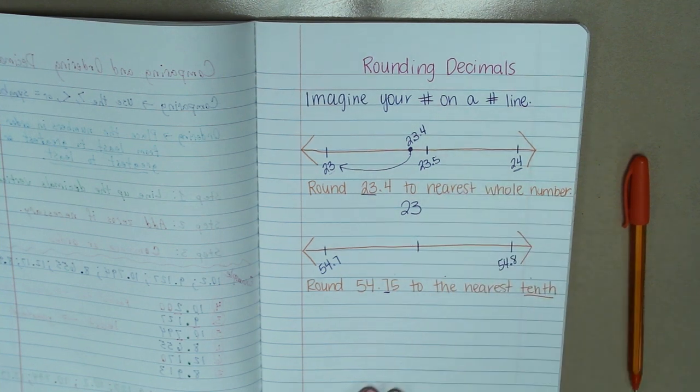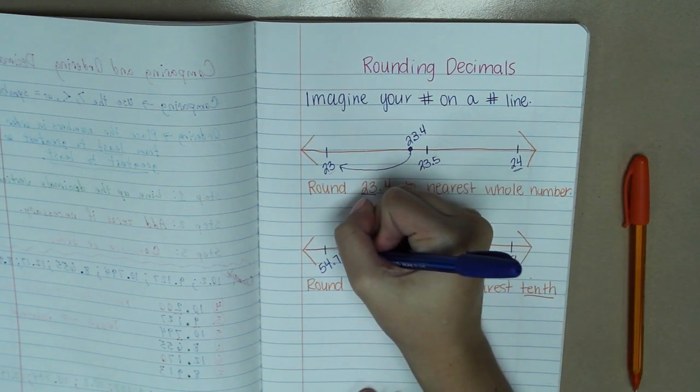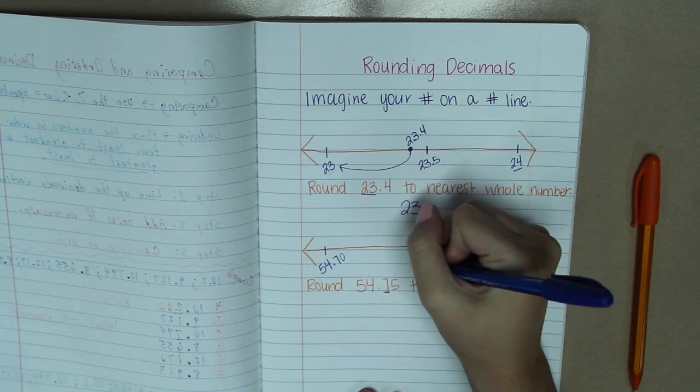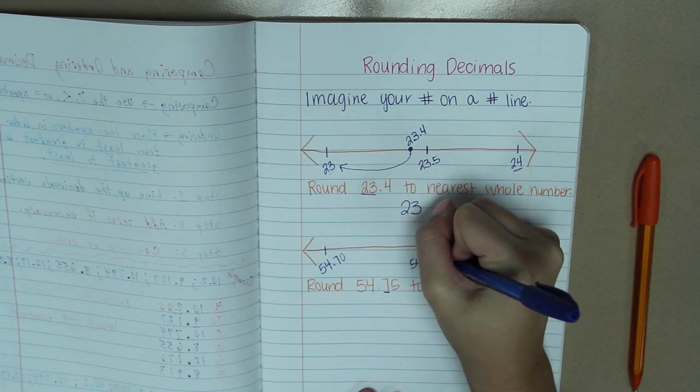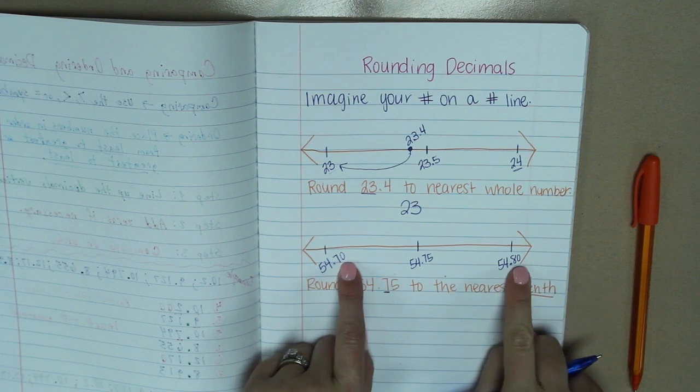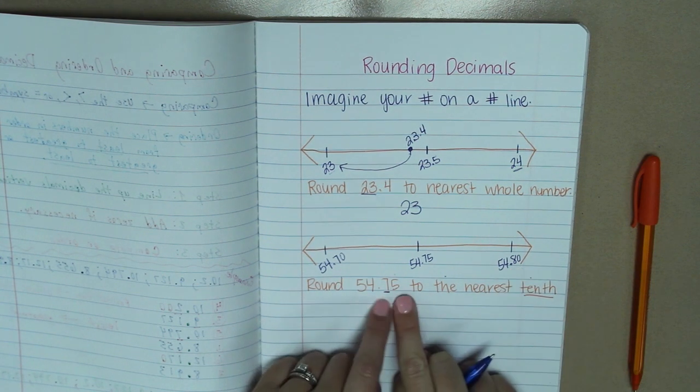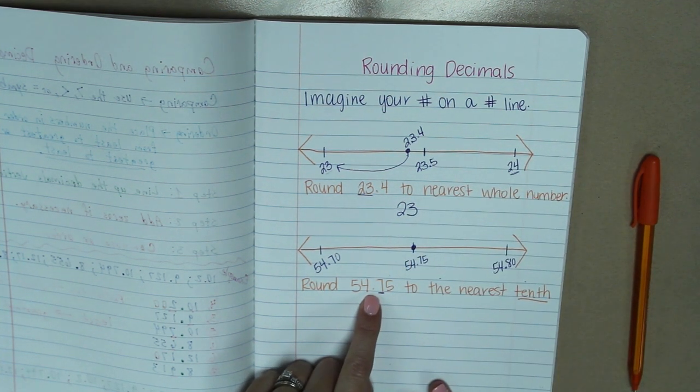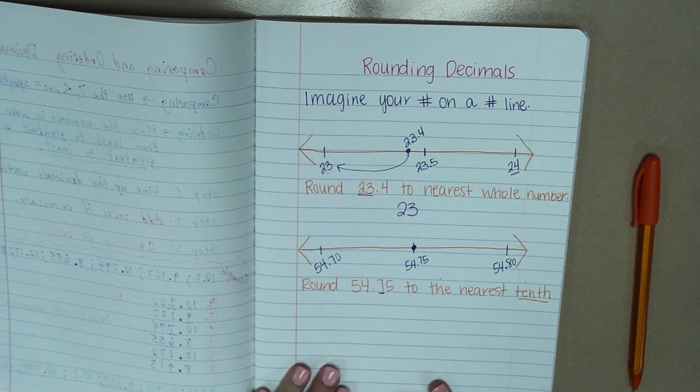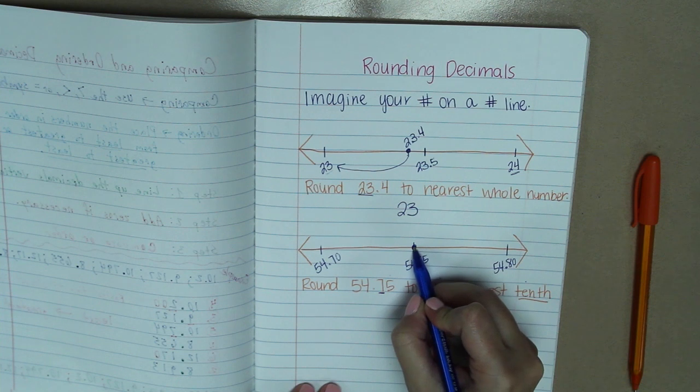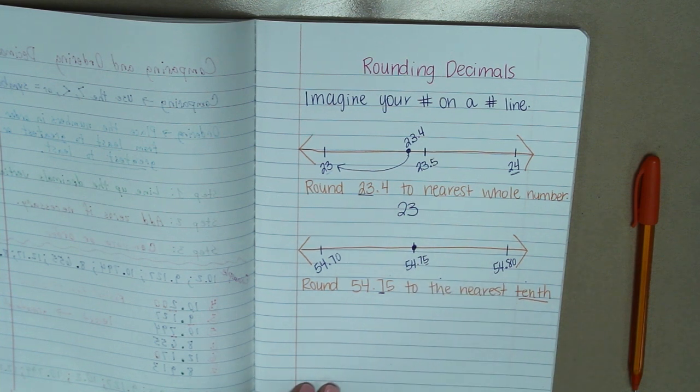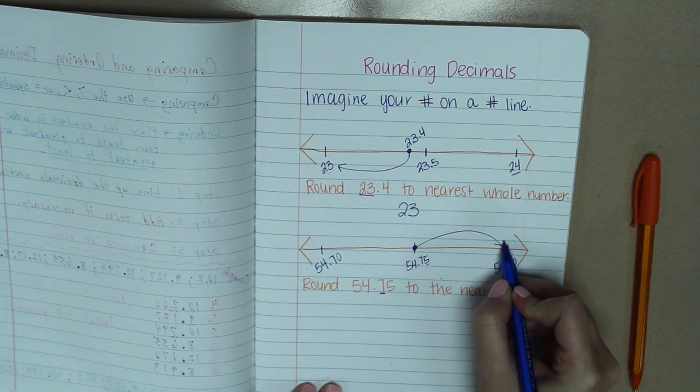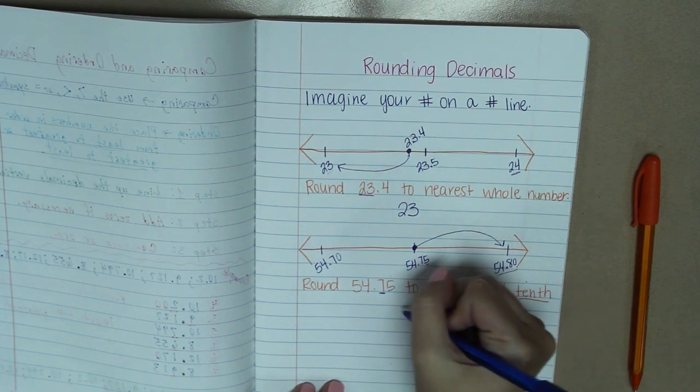Well, right in the middle, if we imagine this as 70 hundredths and 80 hundredths, the middle is going to be 54 and 75 hundredths. Because 75 is in the middle of 70 and 80. Now, you should notice that that is our original number. So our number is located right in the middle of our number line. So think back to your previous rounding, and you should know that if it's exactly in the middle, a 5 has the rounding rule to go up. So in this case, we are going to round up to 54 and 8 tenths.